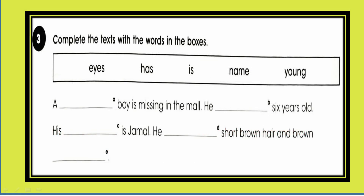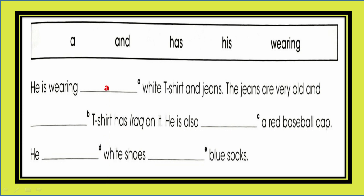Exercise three: complete the text with the words in the box — eyes, has, is, name, young. A young boy is missing in the mall. He is 6 years old. His name is Jamal. He has short brown hair and brown eyes. He is wearing a white t-shirt and jeans. The jeans are very old and his t-shirt has 'Iraq' on it. He is also wearing a red baseball cap. He has white shoes and blue socks.